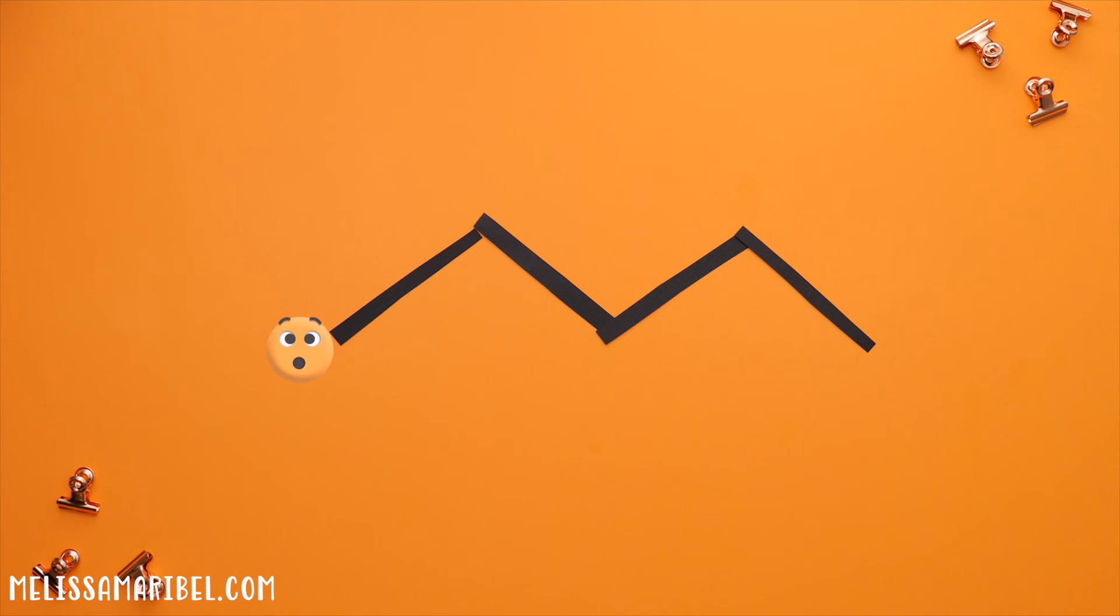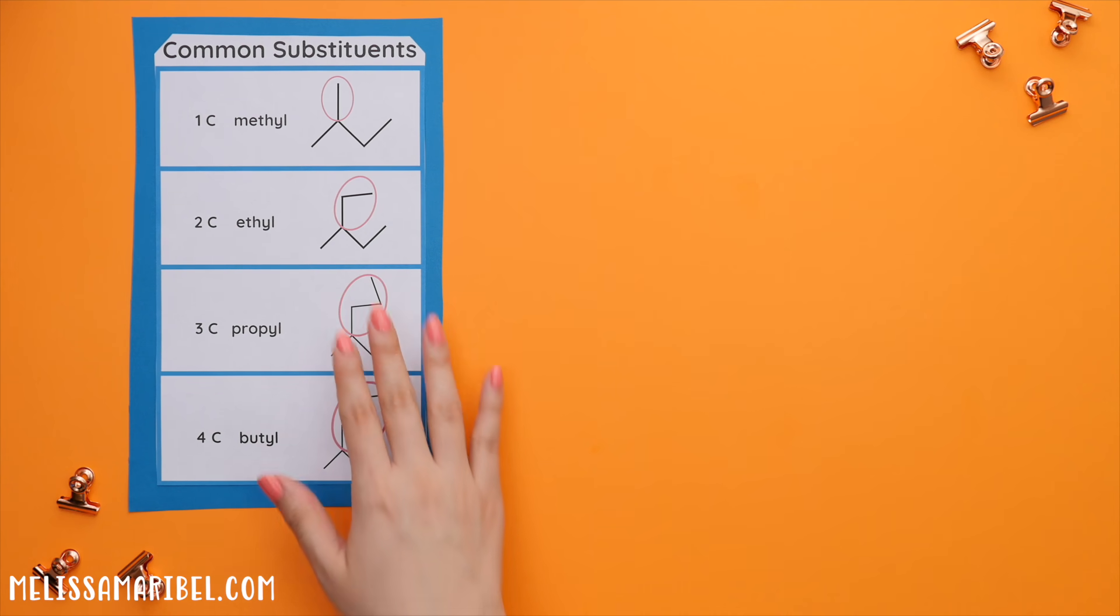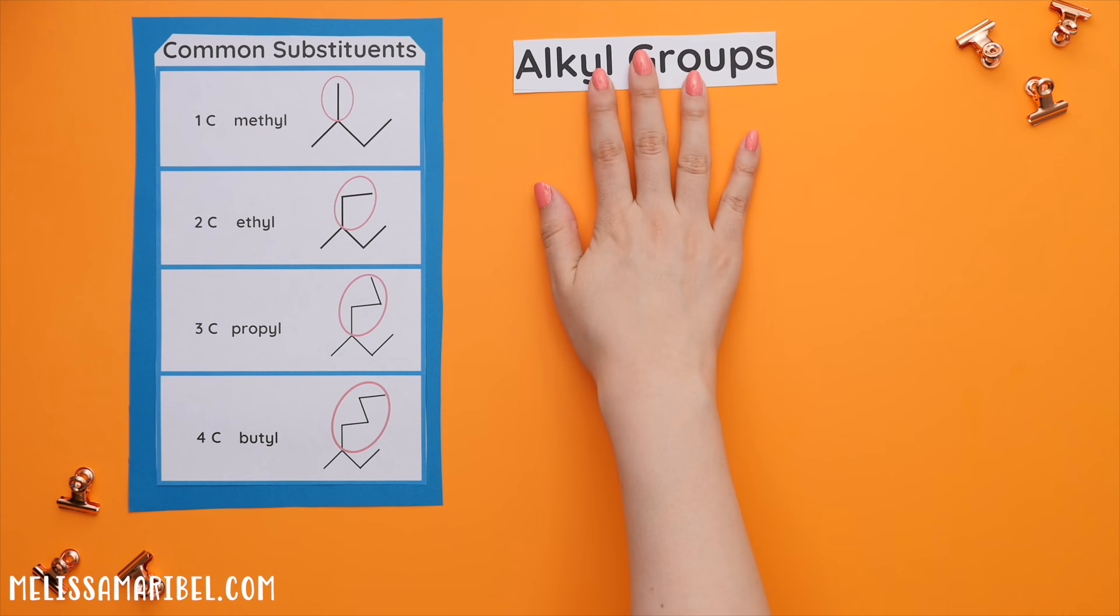Think of it this way. The longest carbon chain is like the body of a person and the substituents are the arms or legs because that's what's sticking out of the body. Here's a list of the most common substituents you will first see. These specific substituents are also referred to as alkyl groups.